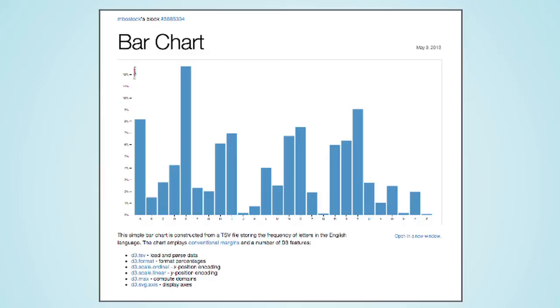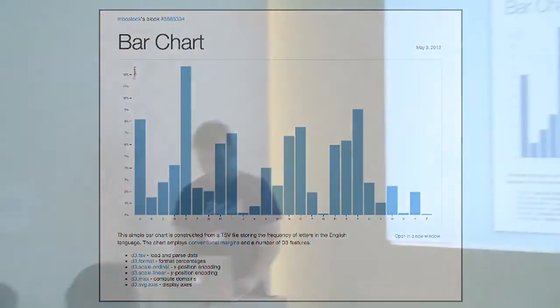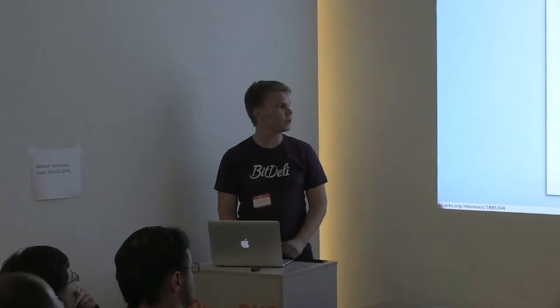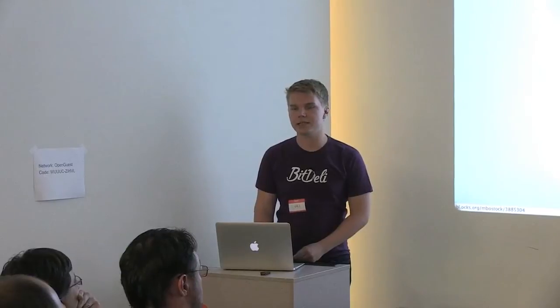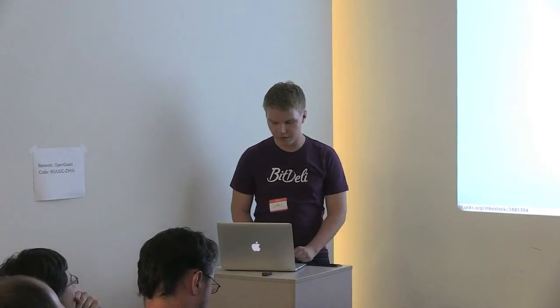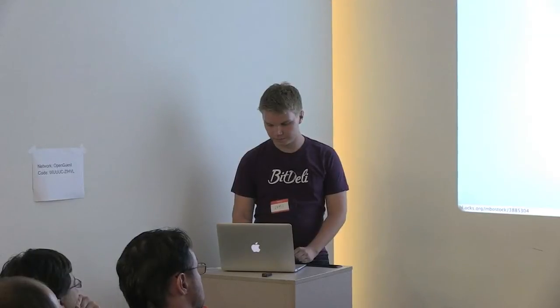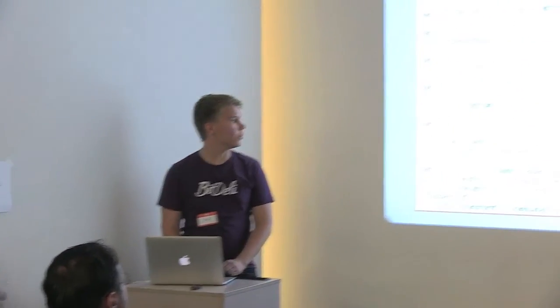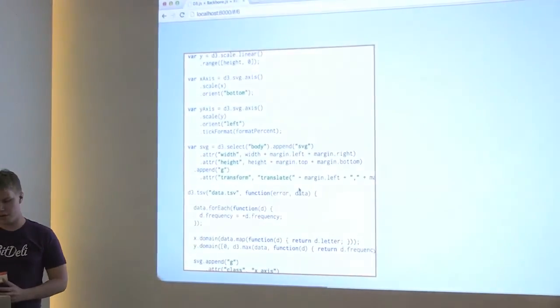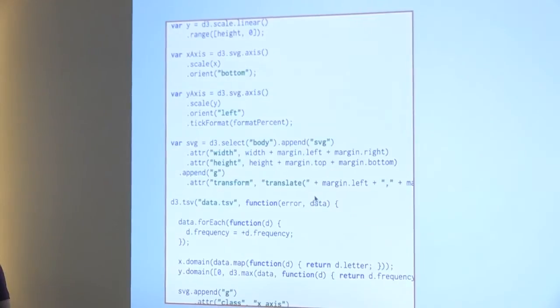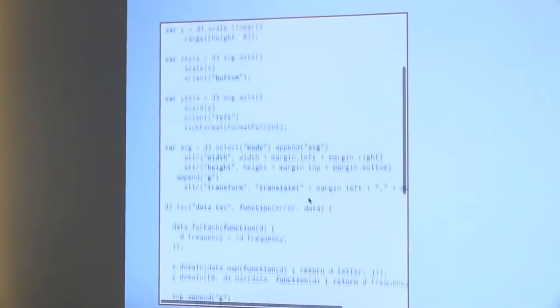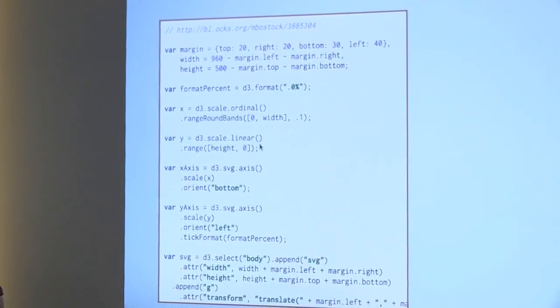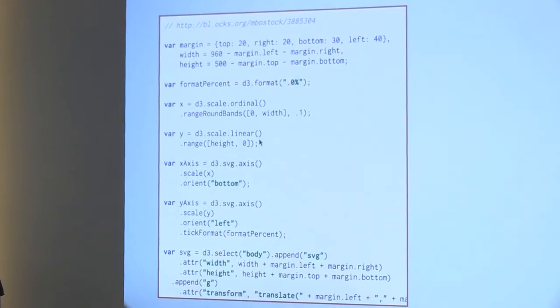So as it happens, I'm using the same example. Good for you because we already went through part of this. So this is the simple bar chart example that's on the D3 gallery. It's one of the basic examples that Mike Bostock has provided for D3. And if we look at the code, it's really simple D3 code. This is something that people are used to when doing something with D3.